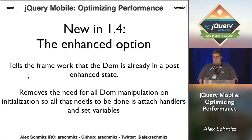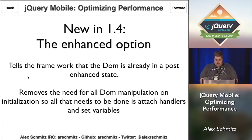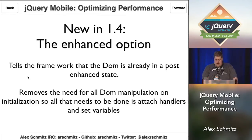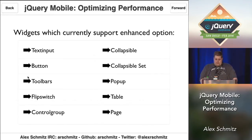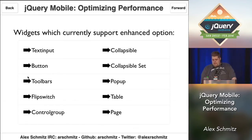In 1.4, we've also added an 'enhanced' option. It tells the framework that what you've provided is already in an enhanced state, so we don't need to do any DOM manipulation. By removing that need for DOM manipulation, it really improves widget startup — all we're doing when you call a widget is setting some variables and attaching event handlers. Not all widgets support this currently, but it's currently supported by text input, button, toolbars, flip switch, control group, collapsible, collapsible set, pop-up, table, and page. On any of those, you can provide markup pre-enhanced from your server.